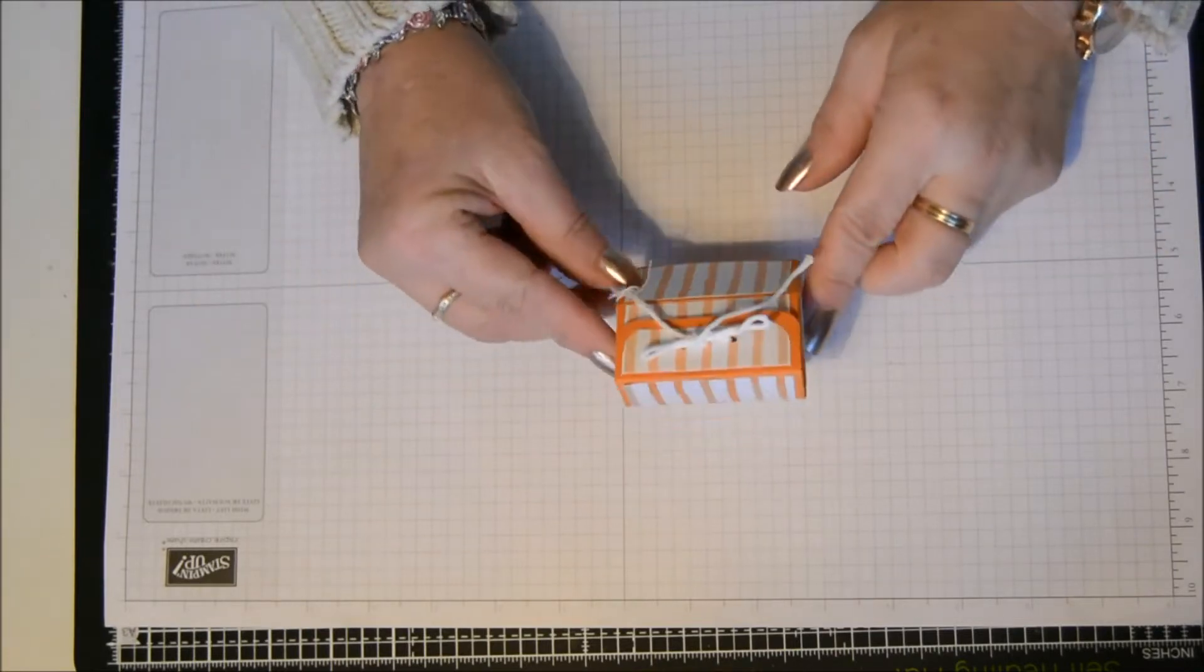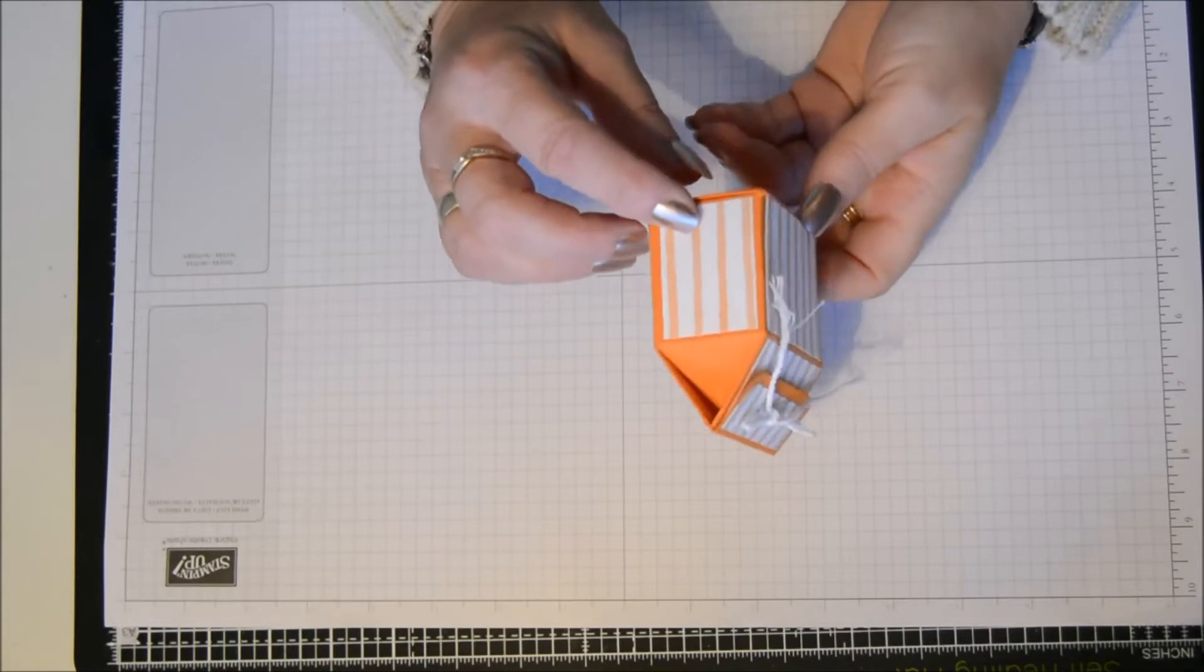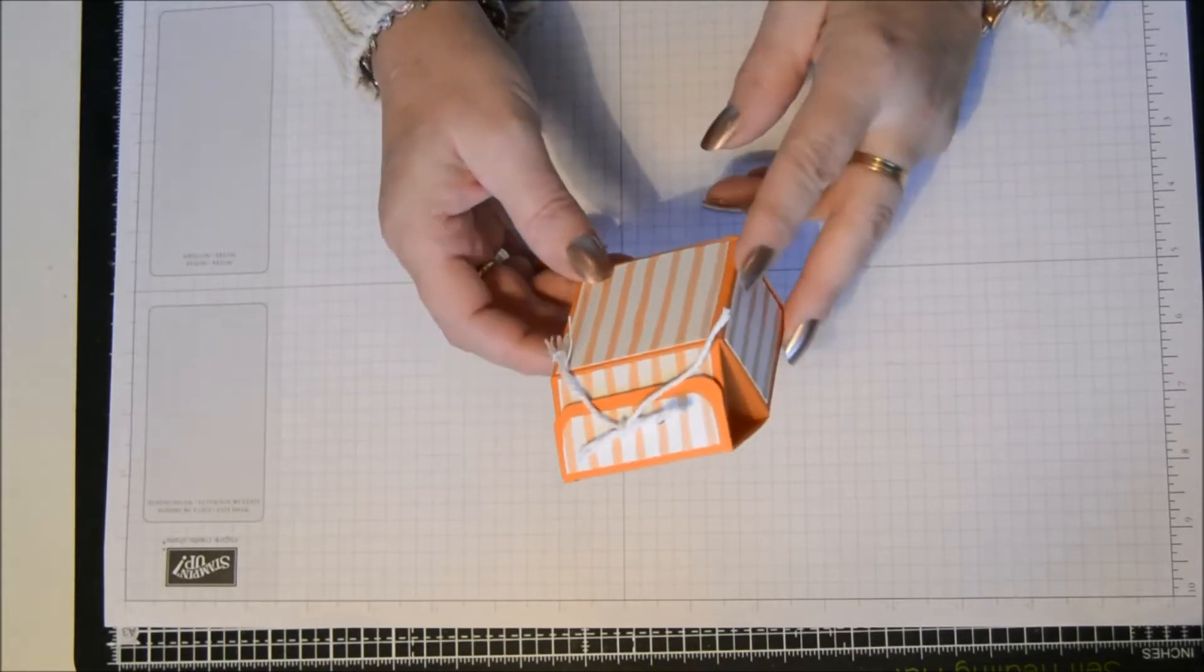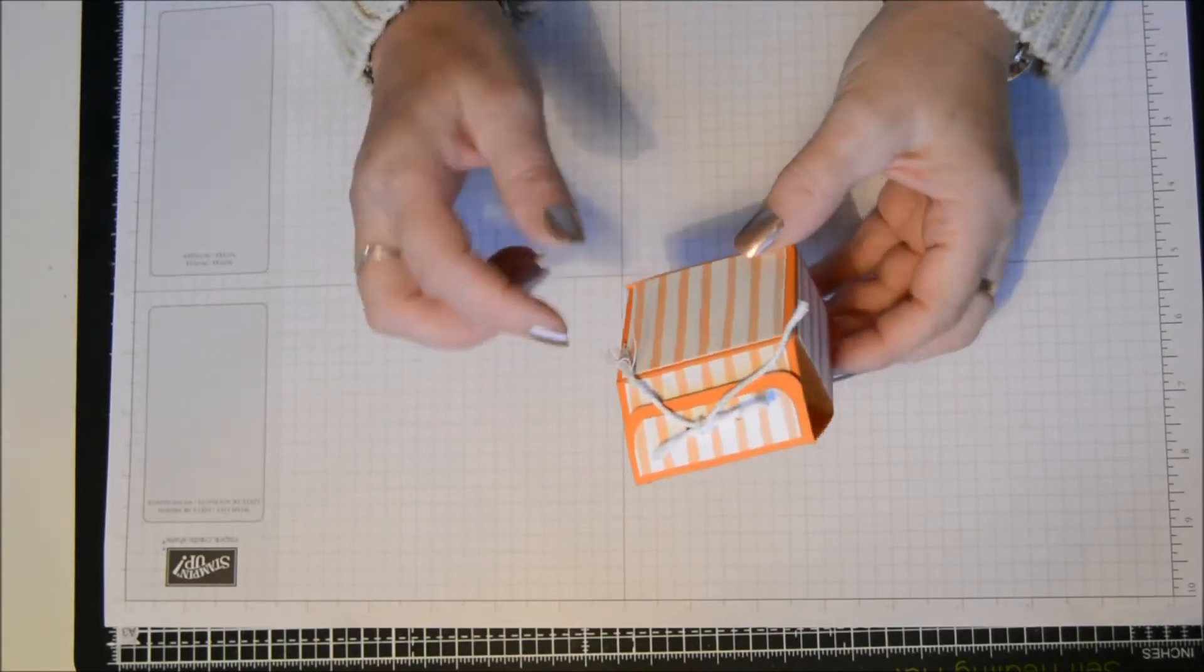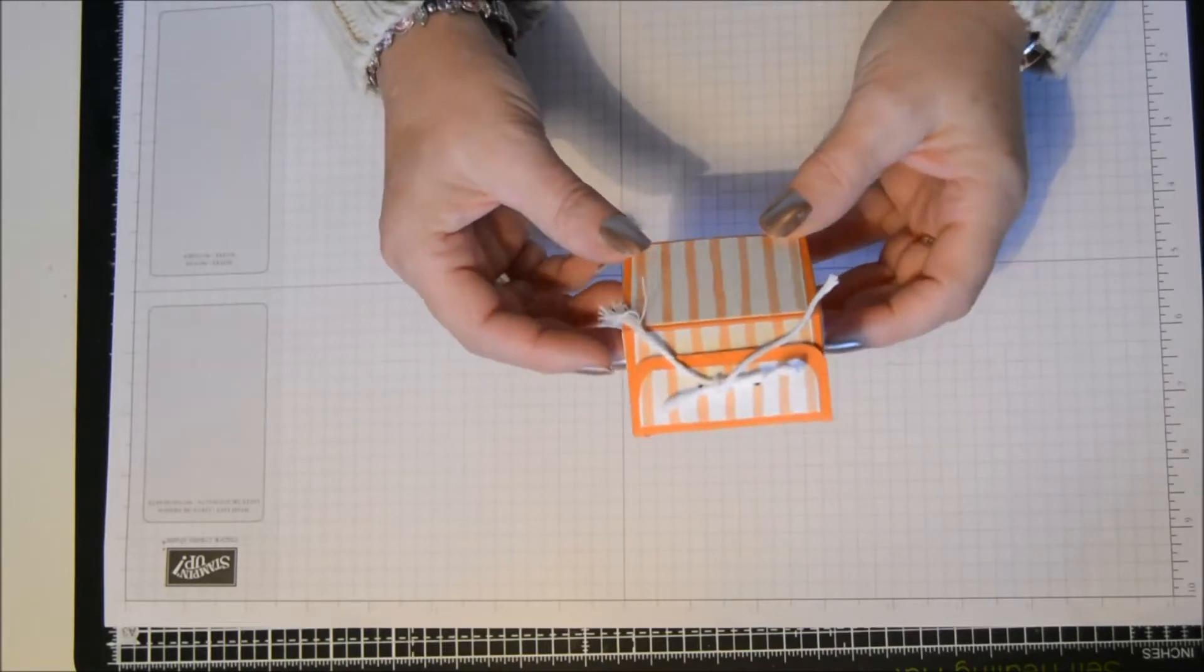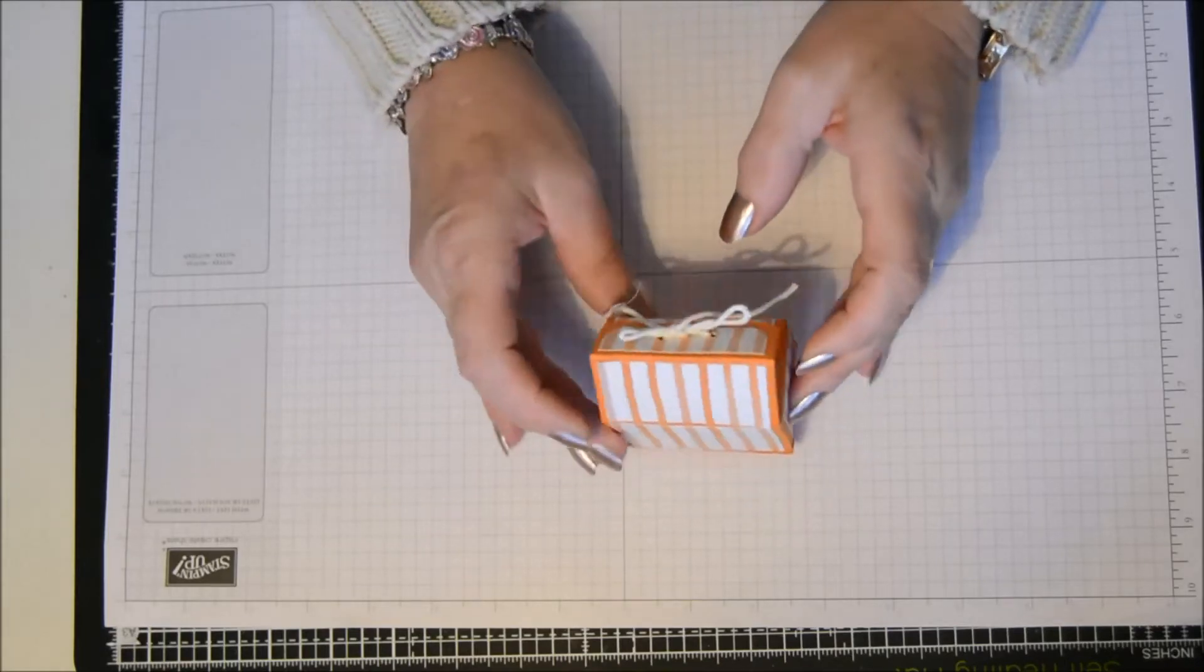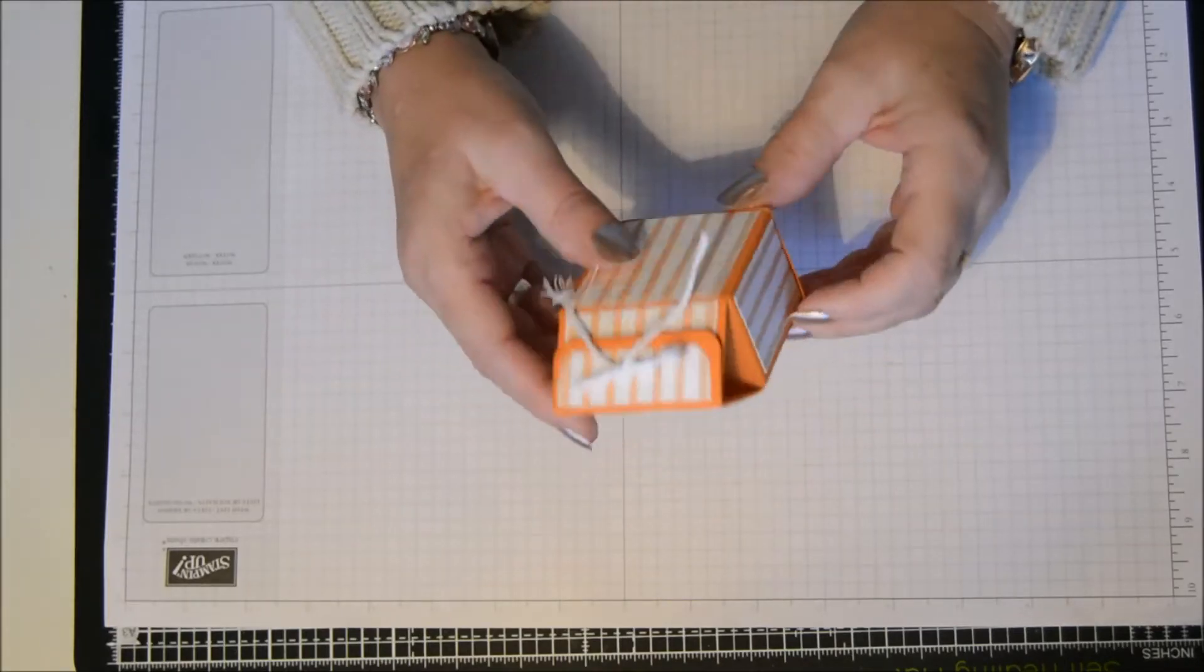Today I'm going to make this super little treat box. It's very similar to a milk carton box, but it's narrow here and longer here, whereas the milk carton's pretty square. It's very simple, very quick to make. I think it's very, very super.